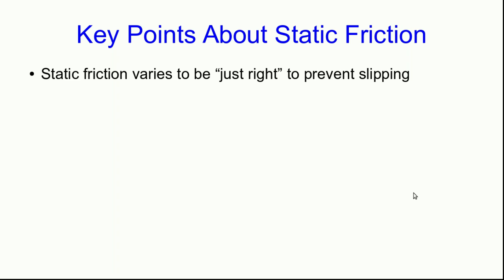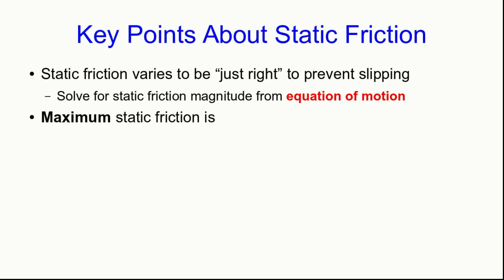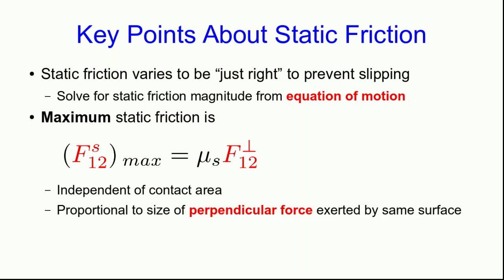So let me just summarize these points about static friction. It always varies to be just right to prevent slipping from happening, and so we generally have to solve for it out of the equation of motion. Its maximum value is given by a formula like this and is independent of contact area and proportional to the size of the perpendicular force exerted by the same surface. And note that mu s is a property of the surfaces, which we call the coefficient of static friction.